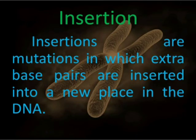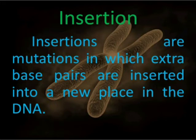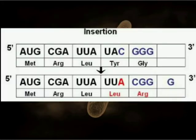Insertions are the mutation in which extra base pairs are inserted into a new place in the DNA segment. There is a gain, insertion, or duplication of a segment of DNA and as a result there is an alteration in chromosomes. Because we know that genes are located on chromosomes, alteration in chromosomes results in abnormalities or aberrations — chromosomal aberrations.